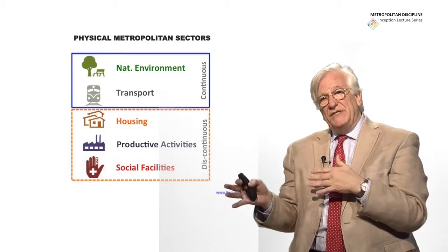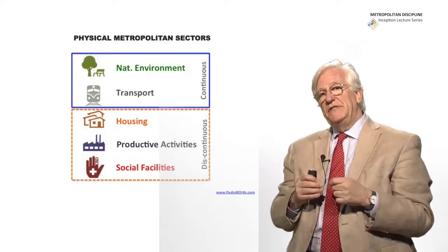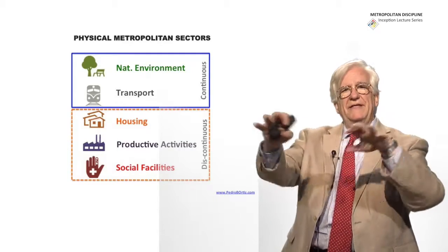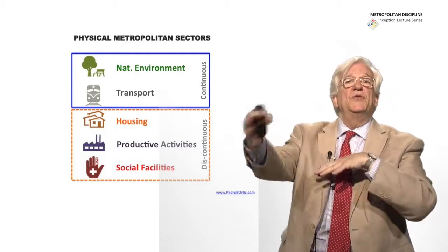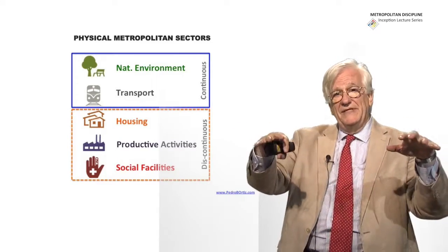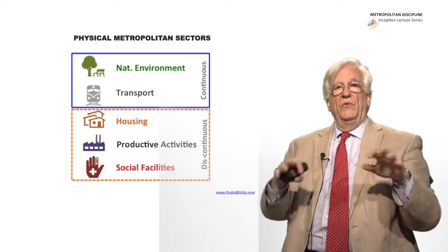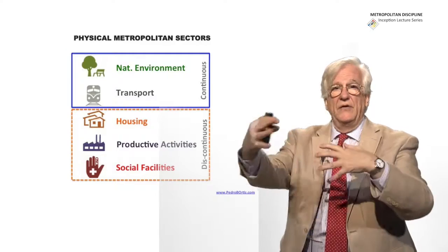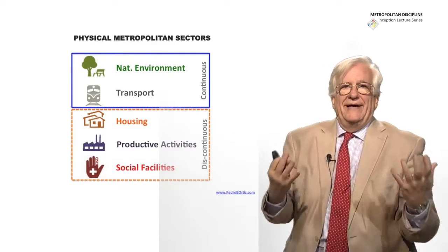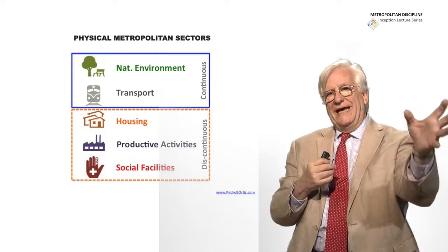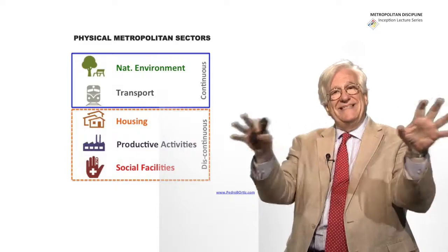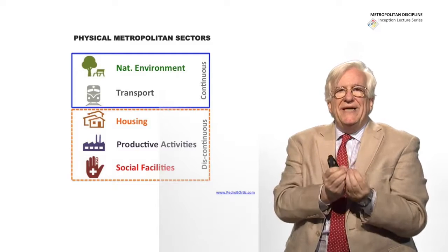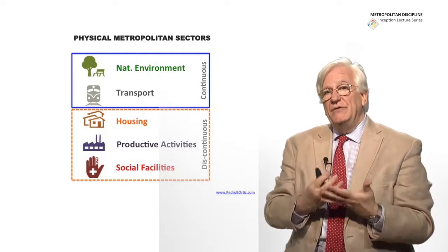On the other hand we have the discontinuous systems, which is housing, productive activities, and social facilities. Housing is a system depending on where you put some houses is going to affect the pattern of transport, is going to affect the pattern of distribution of goods, is going to affect the flows of elements, and is going to affect the other housing wherever in the metropolis. The income level of that housing is going to affect many other aspects. So housing is a system. Hospitals is a system depending on your cancer hospital or maternity hospital whatever is a system and they are all related together and they are setting in space, but they don't need to be together. They don't need to be one next to the other. So they are discontinuous systems.